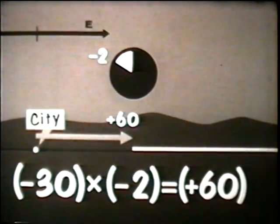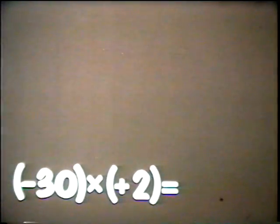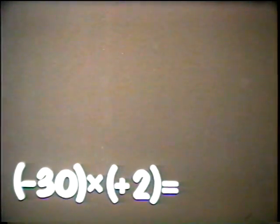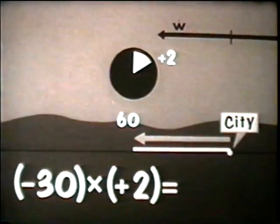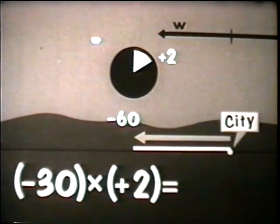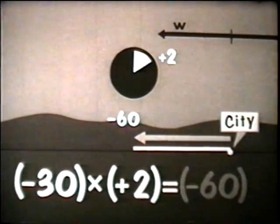Now let's multiply two numbers with unlike signs. A train going west has been averaging 30 miles per hour since it left the city two hours ago. Because movement is west, the 30 is negative. The 2 is positive because it represents time after leaving the city. What is the train's present position? In two hours, the train will be 60 miles west of the city — negative 60 is the answer. The product of a negative and a positive number is a negative number.